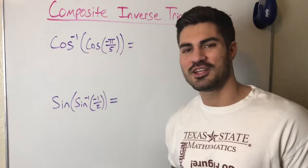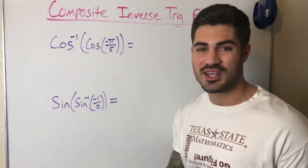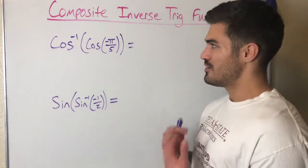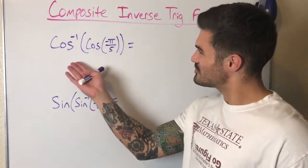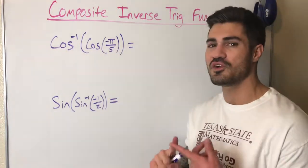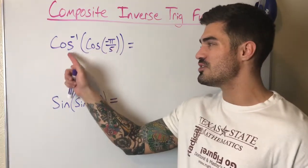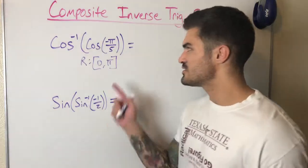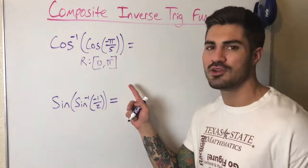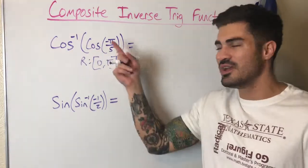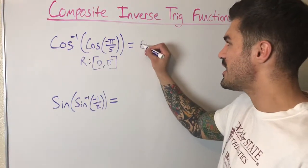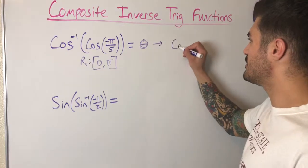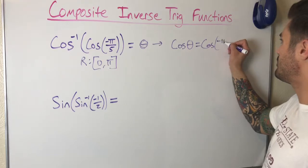Here are a couple more examples. I encourage you to pause and try them on your own. For this one, the outer function is cosine inverse and the inner function is cosine of negative π/5. The first step: check if negative π/5 is in the range of cosine inverse, which is zero to π. It clearly is not. It's also not on the unit circle, so we write this equals theta and use inverse function properties.